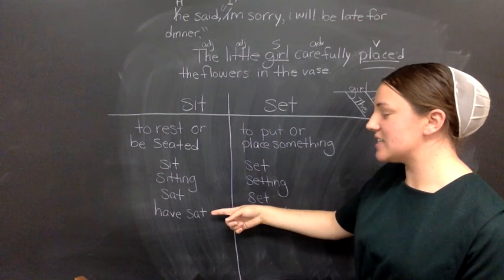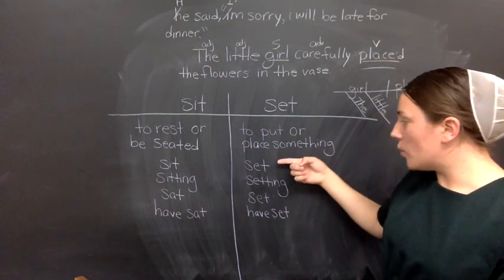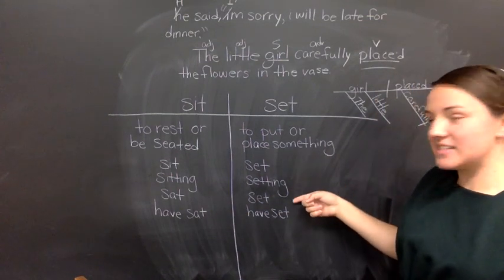There are four forms of each of these words. We have sit, sitting, sat, and have sat. We have set, setting, set, and have set.